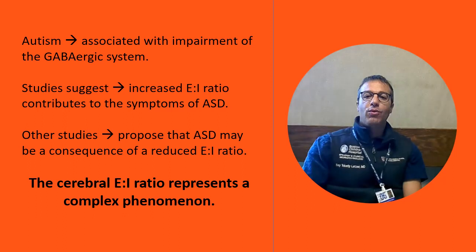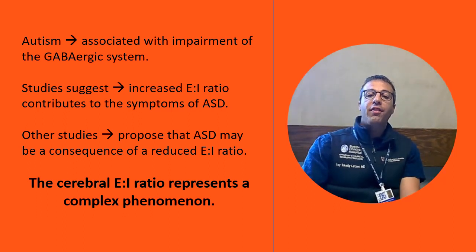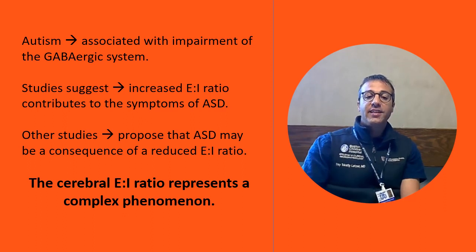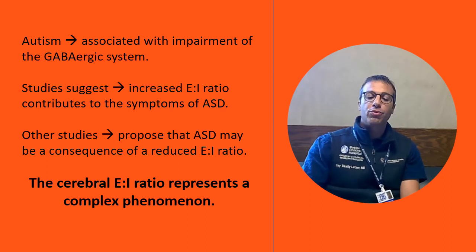How is all of this connected to autism? One of the leading theories about the neurobiological etiology of autism says that it may be caused by disruption of the GABAergic system and the brain's excitation-inhibition ratio.